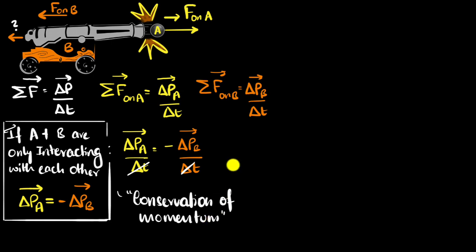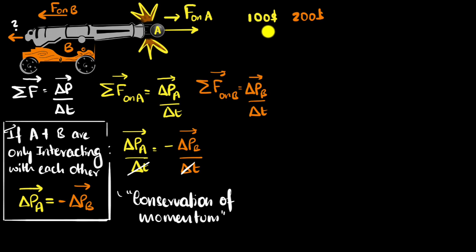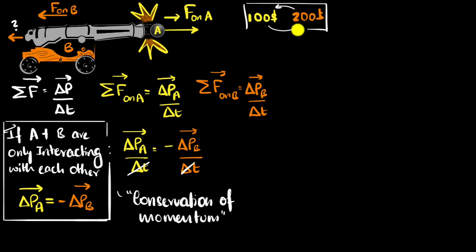A helpful analogy to think about would be in terms of money. Imagine I had $100 with me and you had $200 with you. Now, if the condition is that we are only going to be exchanging money amongst ourselves, then whatever money I lose — say I lose $20 — you would have gained that $20. Whatever money you lose — say $50 — I would have gained that $50, because we are only exchanging money amongst ourselves. So whatever amount we exchange, money that I have will change, money that you have will change, but our total money would stay the same — $300.